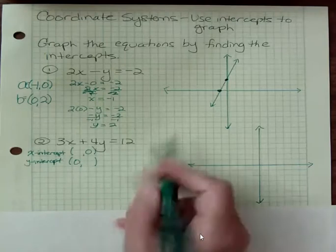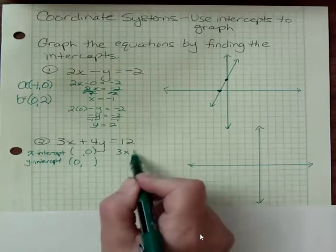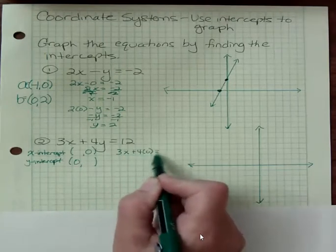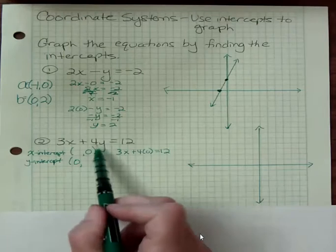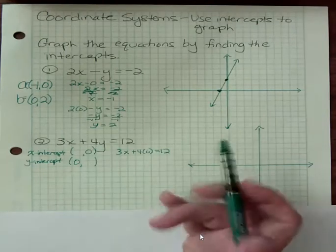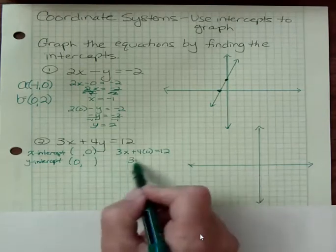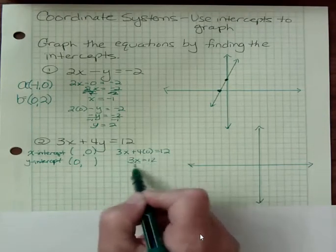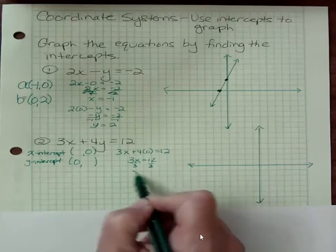The x-intercept, y is zero. 3x plus 4 times zero is 12. Maybe you can see, oh, multiplying by zero is just going to make that go away, and you can directly write down 3x equals 12. That would be perfectly acceptable. x is 4.